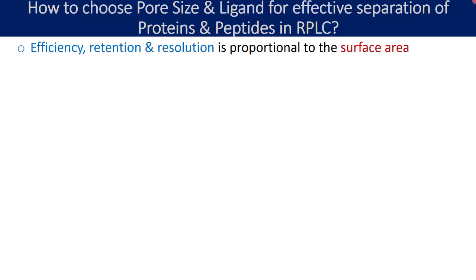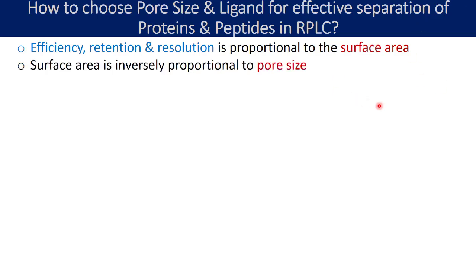First, let us understand on which parameter the efficiency or number of theoretical plates, the retention time, and the resolution are dependent. It actually depends on the surface area. I am talking about the surface area of the stationary phase. The efficiency, retention time, and resolution are proportional to the surface area — the more surface area available of the stationary phase, the more will be the efficiency, retention time, and resolution.